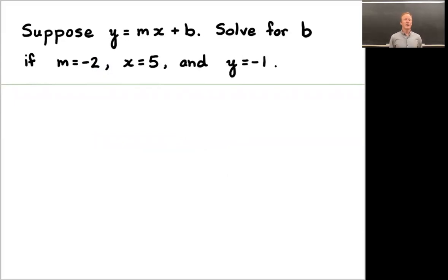Let's move to the next problem. Suppose y = mx + b. Solve for b if you know that m = -2, x is 5, and y is -1. Pause the video here. I'll see you back in a moment. Welcome back. y = mx + b, but we know that m is -2, we know that x is 5, and we know that y is -1. Making those substitutions, we have -1 = -2 times 5 + b. Well, -2 times 5 is -10. And we can add 10. And we'll have 9 = b. That's what we were looking for. b is 9.